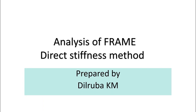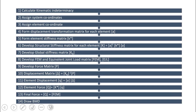Let us see how to analyze a frame structure by using the direct stiffness method. These are the 14 steps you should go through in order to analyze the frame structure. A lot of the steps are very similar or the same as that of the stiffness method.